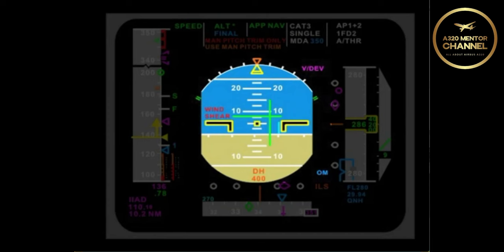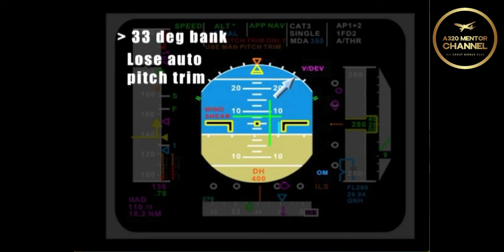Is there anything that may occur beyond 33 degrees bank? Beyond 33 degrees of bank, I am going to lose auto pitch trim. Once I get to 45 degrees, I will lose the autopilot and flight directors.